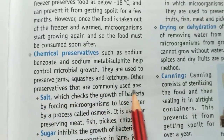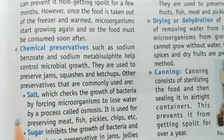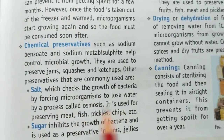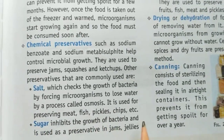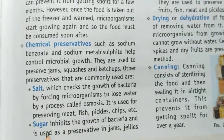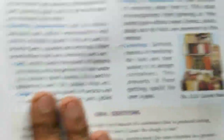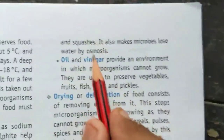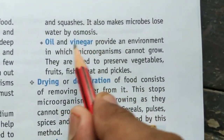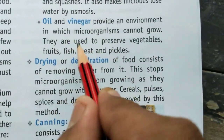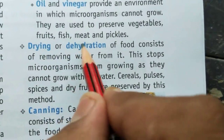Other commonly used preservatives include salt, which checks the growth of bacteria by forcing microorganisms to lose water through osmosis — used for preserving meat, fish, pickles, and chips. Sugar inhibits the growth of bacteria and is used as a preservative in jams, and also makes microbes lose water by osmosis. Oil and vinegar provide an environment in which microorganisms cannot grow, and are used to preserve vegetables, fruit, fish, and pickles.